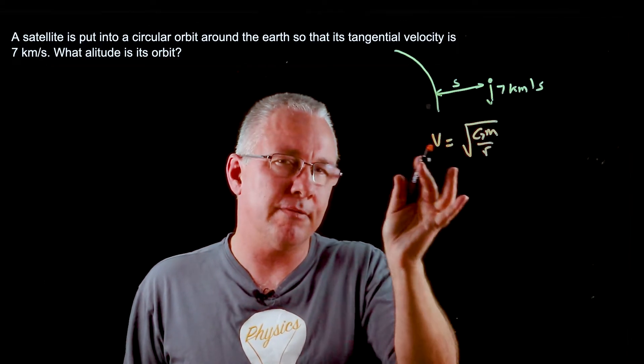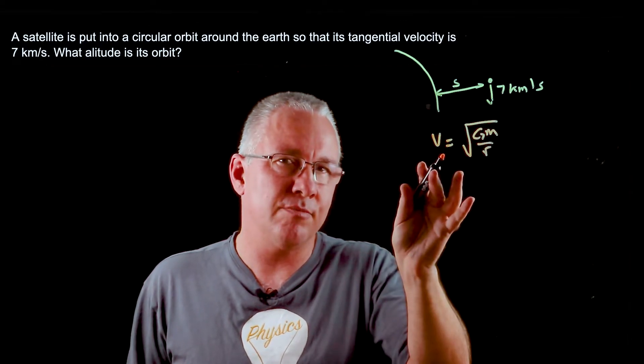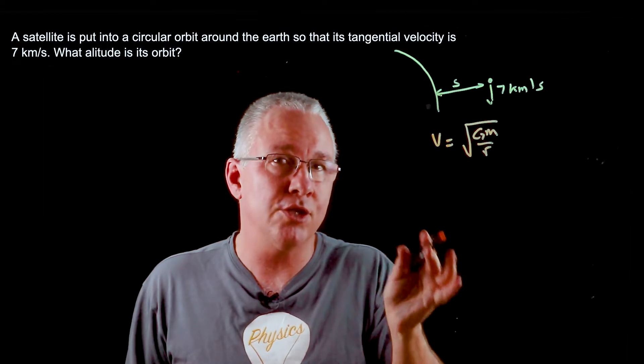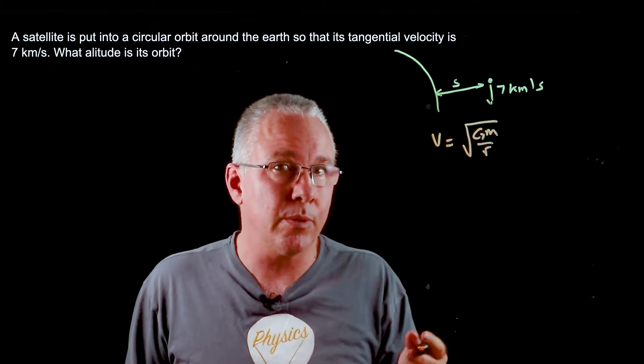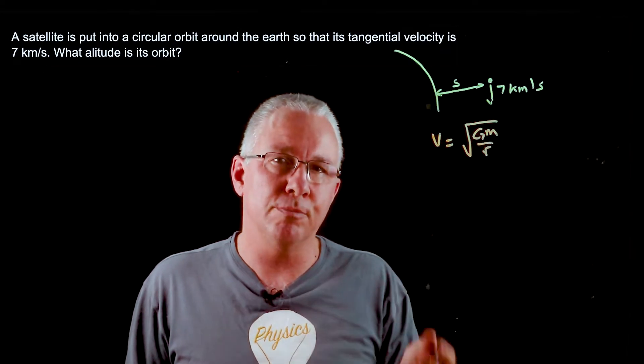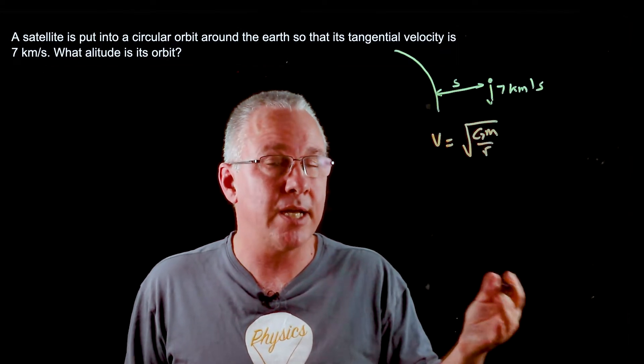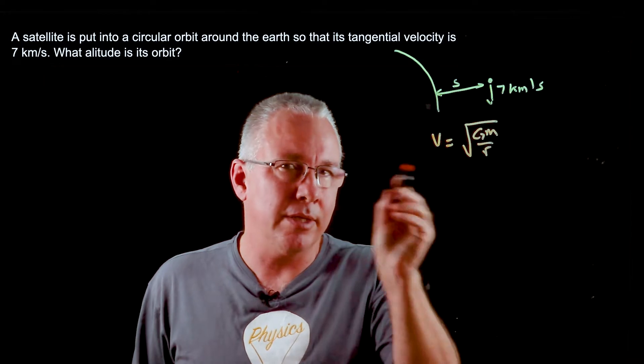Now if you want to remind yourself of how that's resolved, that's the result of knowing that the gravitational force, that is F equals GM1M2 over r squared, is equal to the centripetal force which is mv squared over r. So if you put those two together, you get that formula.